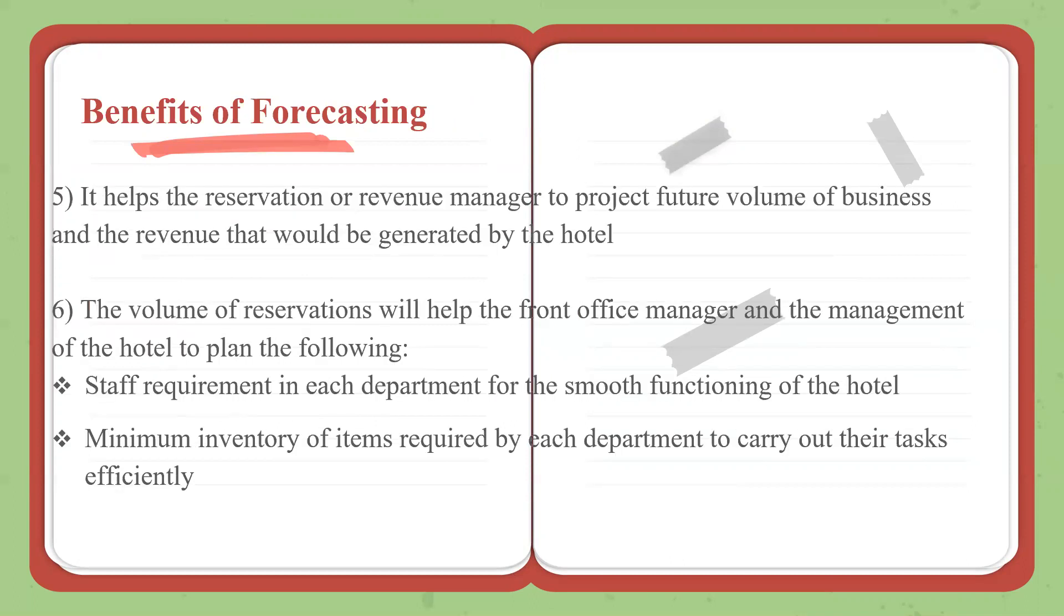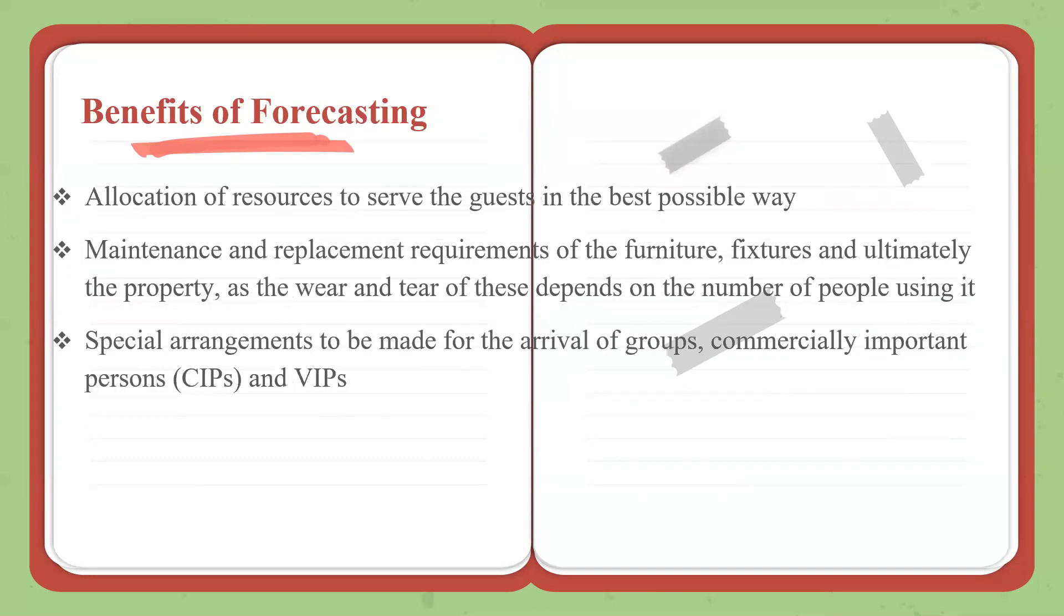We know sold out dates, so you know what to do for them. In general, the staff requirement, inventory required, allocation of resources, maintenance, replenishment, if you're planning any refurbishment or renovation activity, special arrangements for groups—all this is possible if forecasting is correct because you know who's coming, when, and how many are coming.